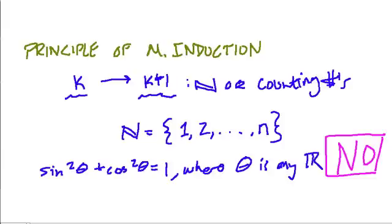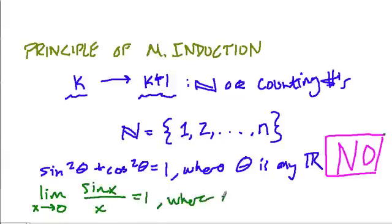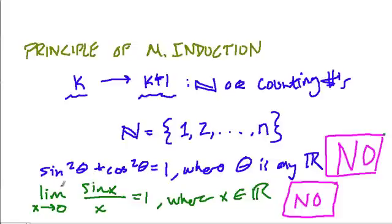And the next choice, I think it's the same idea. The limit as x goes to 0 of sine of x over x equals 1, where x is an element of the reals. No, again, I can't do this here. And it is a fun and interesting proof to look at why the limit as x approaches 0 of sine of x over x equals 1. I enjoy that. I'm not going to get into that here.